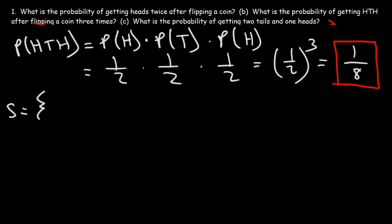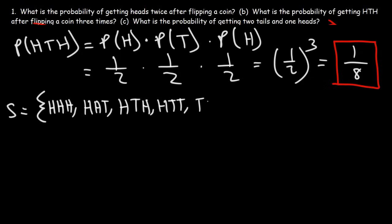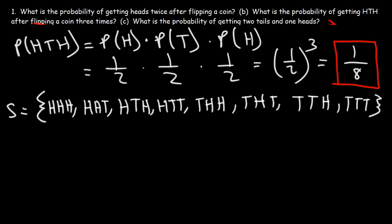Now let's confirm it by writing out the sample space for flipping three coins. We can get all three heads, or heads-heads-tails, or HTH, or HTT, or THH, and so forth. These are the eight possibilities when flipping three coins. Notice that there's only one out of these eight possibilities that leads to the event HTH that we want. So that's why the probability is one out of eight.